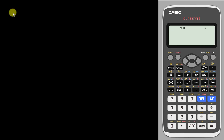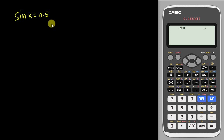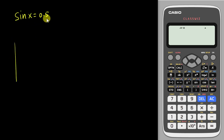So first you have to understand: in the exam if you have something like sine x equals 0.5, how many angles will you have? Most students will answer maybe 1 or 2 angles, but my answer is: if you have sine x equals to 0.5, you will have infinite answers.